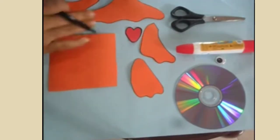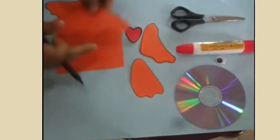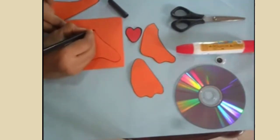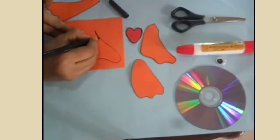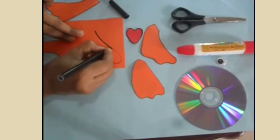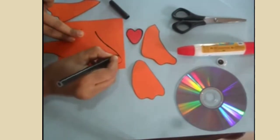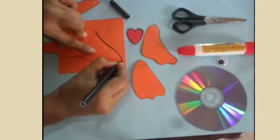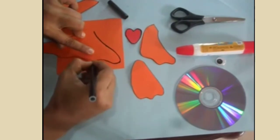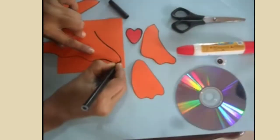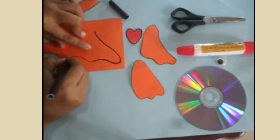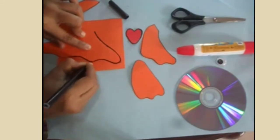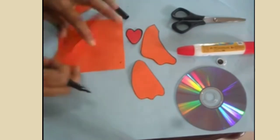Now take the black marker again and you can give an outline to the tail and the fins that I have cut with the help of the scissors. In this manner you can see how to give it an outline so that it looks neat and clean.